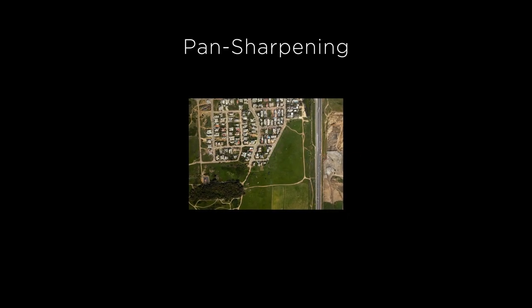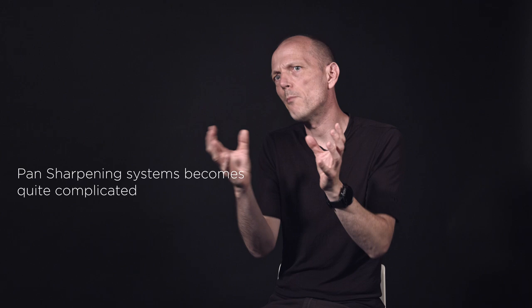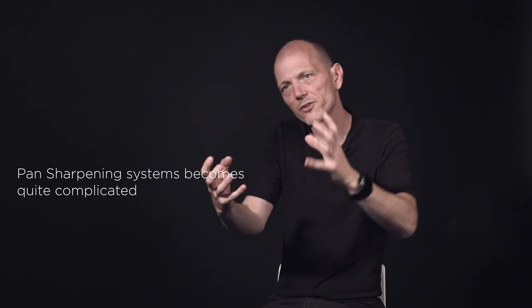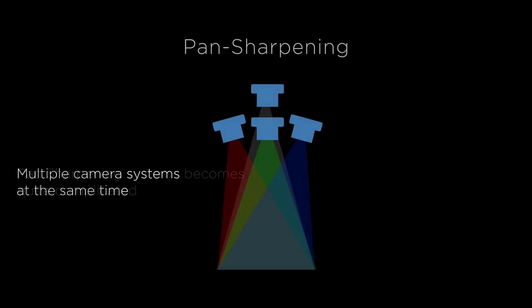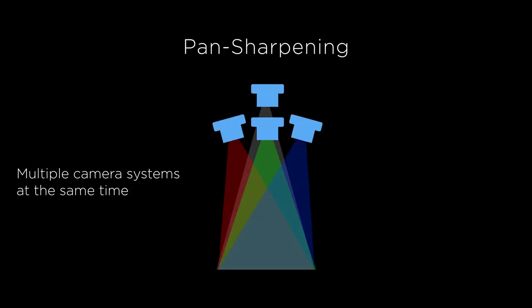Pan-sharpening systems become quite complicated, with multiple camera heads and lenses pointing at the same areas on the ground, requiring precise calibration and synchronization.